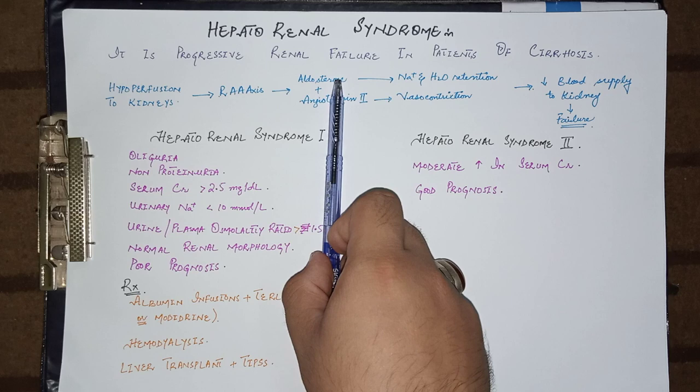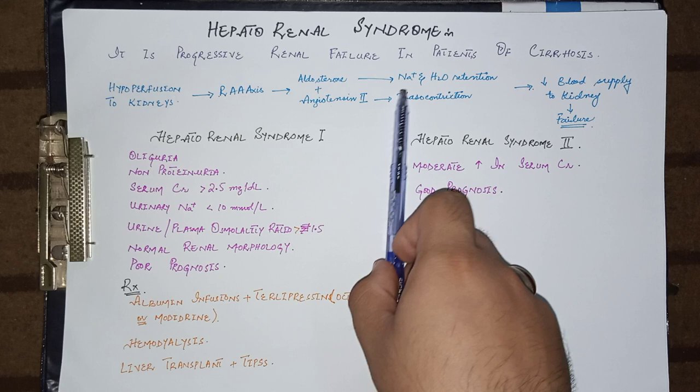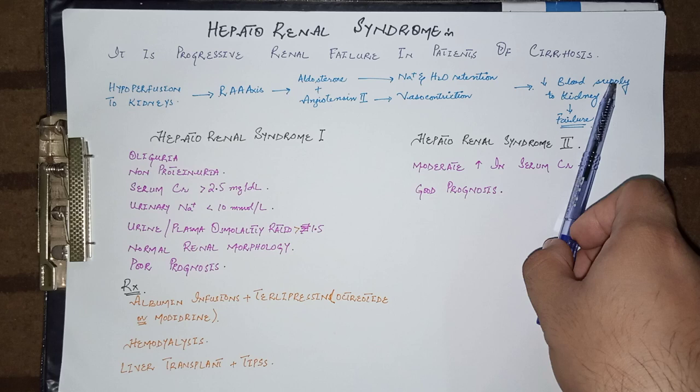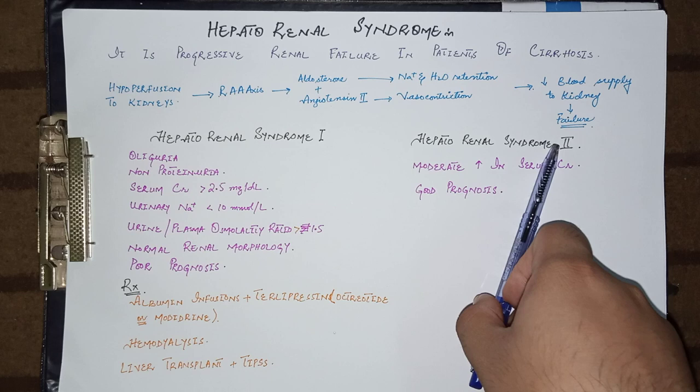Due to further vasoconstriction, it further deteriorates renal function by decreasing blood supply to the kidney. Hepatorenal syndrome has been classified into hepatorenal syndrome type 1 and hepatorenal syndrome type 2.